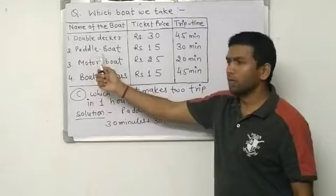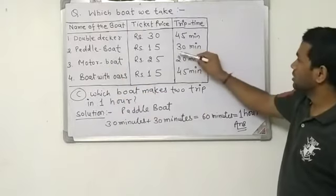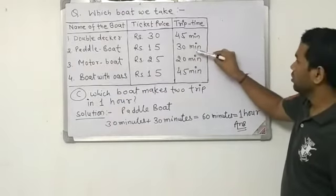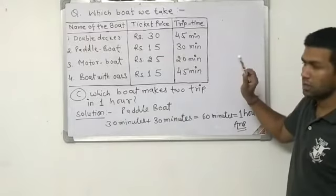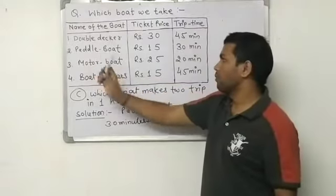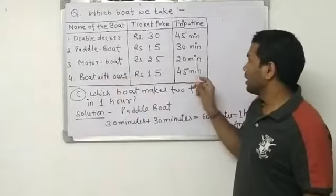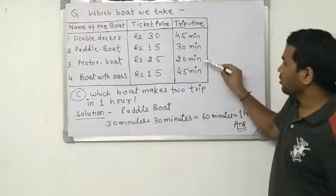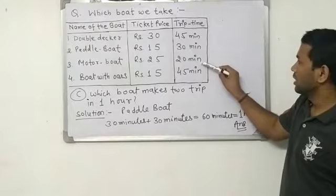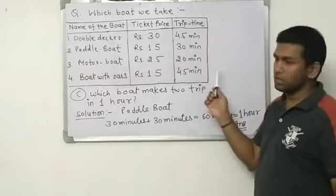Second is paddle boat. This trip time is 30 minutes. So 30 plus 30 is 60. So this is our boat. And again we check motor boat and boat with oars. These are not making 60 minutes.